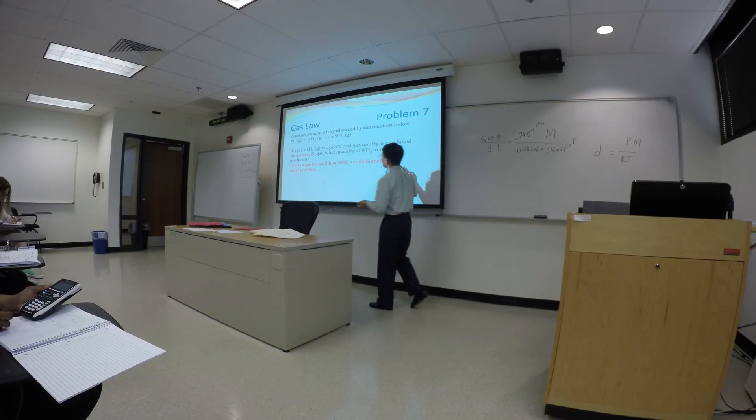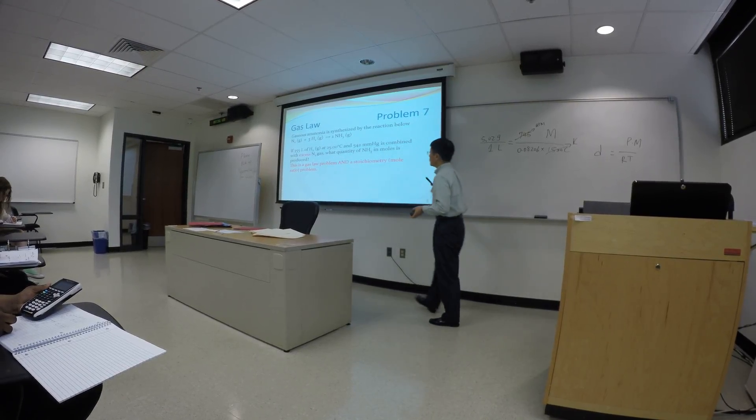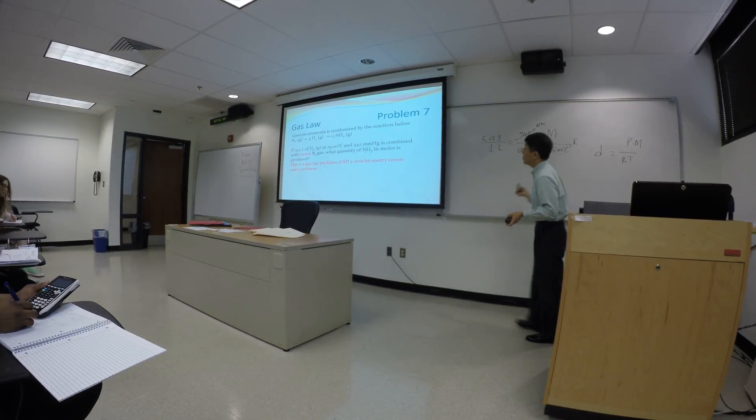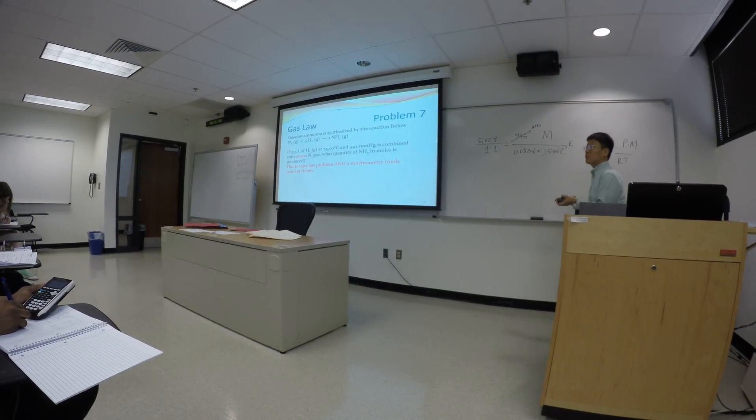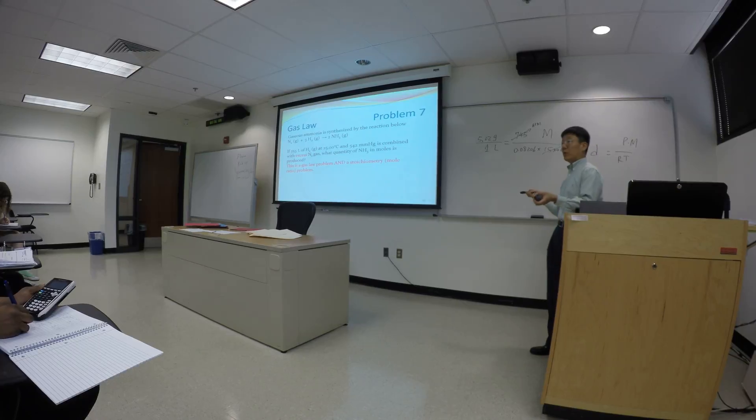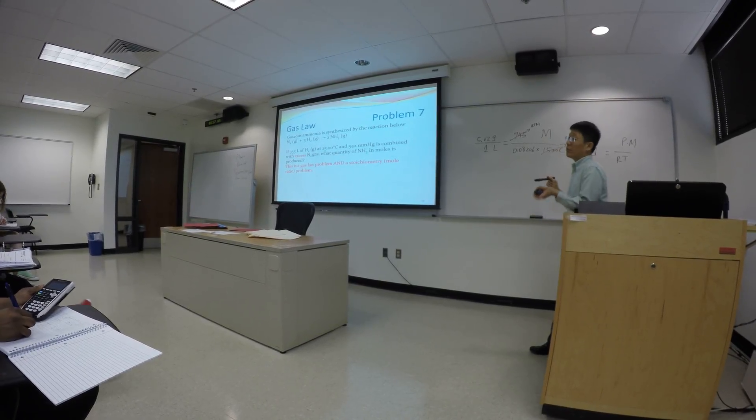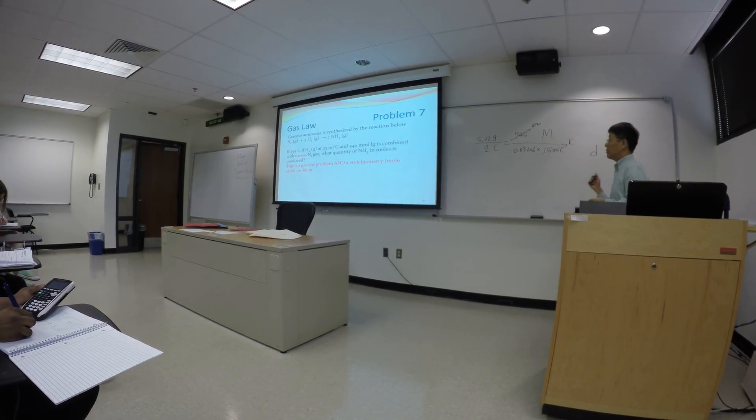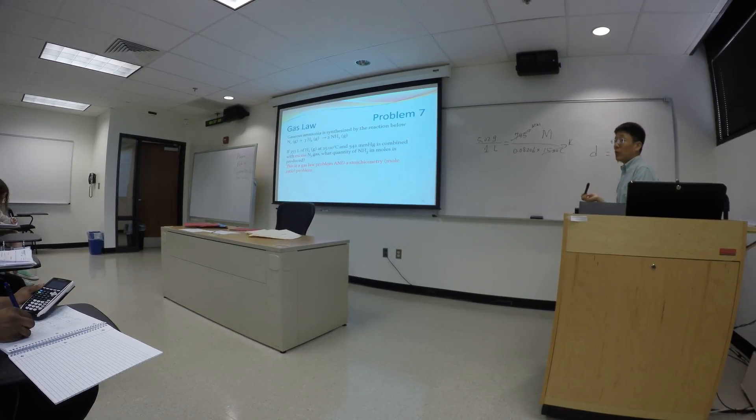So here, 355 liter of hydrogen gas, 25 degrees Celsius, 542 millimeters mercury, mix them with excess amount of nitrogen gas. How many moles of ammonia can you get? So this is a gas law problem and a stoichiometry problem, molar ratio problem.